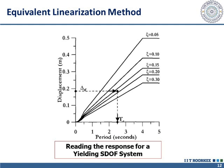Response spectra for damping values ranging from 5% to 30% can be used directly to obtain the displacement response of an inelastic system. We only need to know the equivalent period and ductility demand. The ductility demand is converted to equivalent damping using the expressions discussed earlier, the appropriate damped spectrum is selected, and the spectral displacement is read at the equivalent period. This spectral displacement of the equivalent SDOF then needs to be converted to the roof displacement of the building.